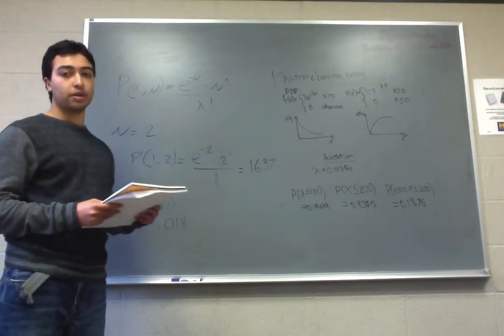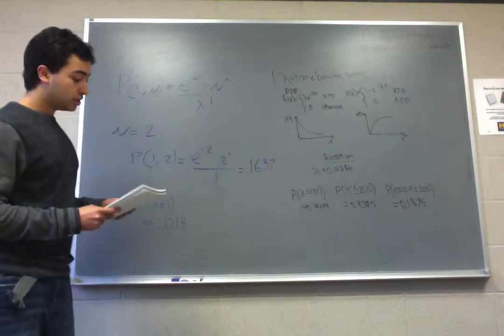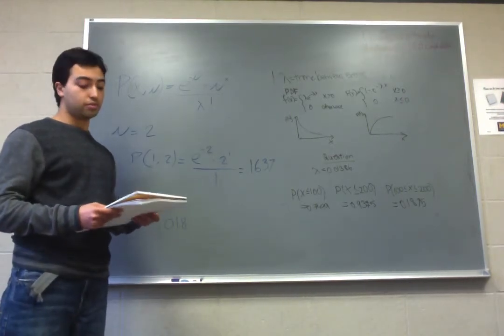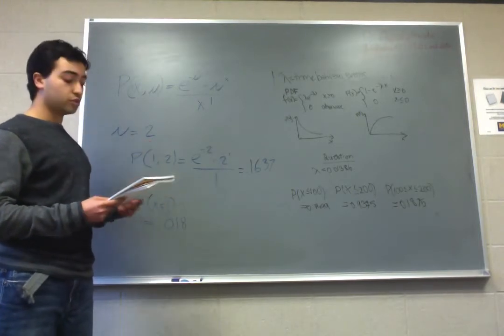We're going to solve problem 82 in the book in section 3.6. The problem tells you there's a verifier that will count the number of missing pulses in a computer. It has a Poisson distribution with mu equals 0.2.